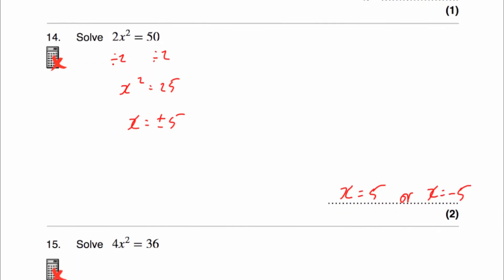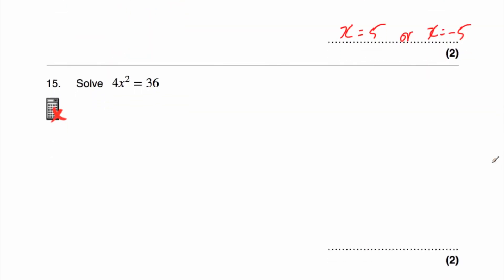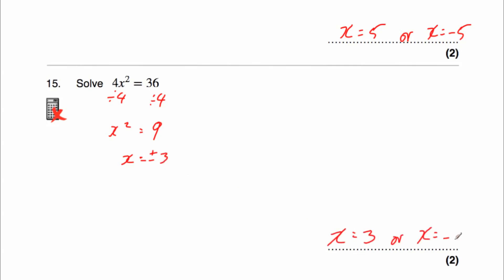Question 15 says solve 4x squared equals 36. We want to get x on its own, so we want to get rid of the multiplied by 4, so we divide both sides by 4. 4x squared divided by 4 is just x squared. On the right-hand side, 36 divided by 4 gives us 9. We're looking for a number squared to get 9, and that's going to be 3. So x equals 3 or it could be negative 3, so x equals plus or minus 3, so x equals 3 or x equals negative 3.